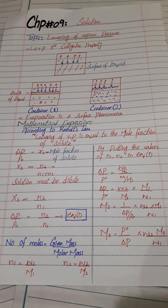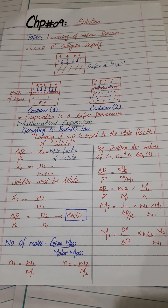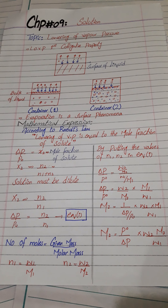So what is vapor pressure? We have a container. In this container, we have a solvent in liquid form. The process of evaporation occurs — liquid molecules change into vapor form, go above the surface of the liquid, and then strike back against the surface. The pressure exerted by these vapor particles striking the surface is called vapor pressure.